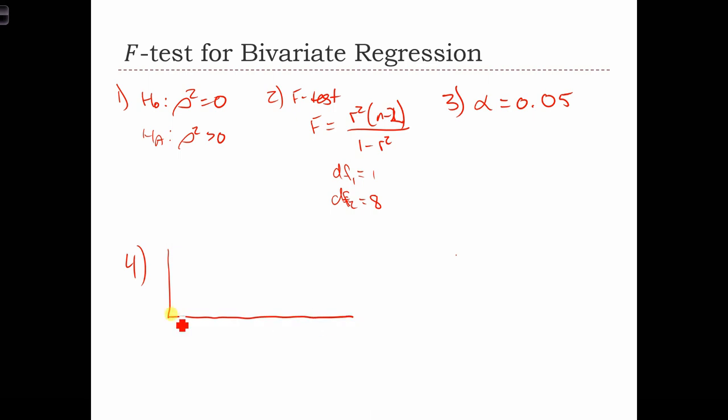Next, we can set up our curve, so here's our F. And we're going to have a critical value over here with 5% of the area to the right of the critical value.